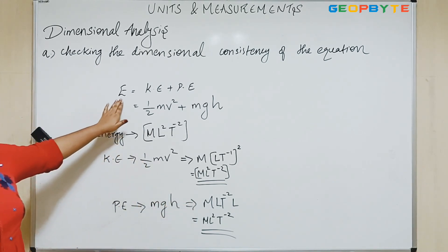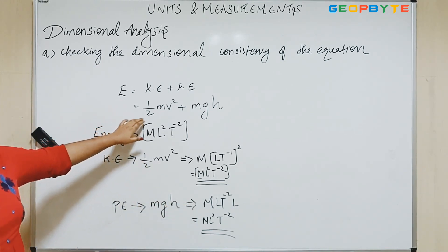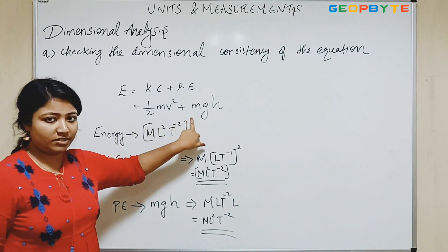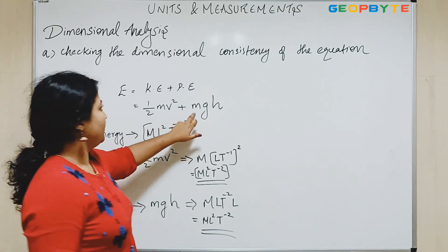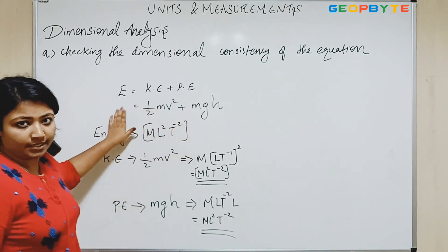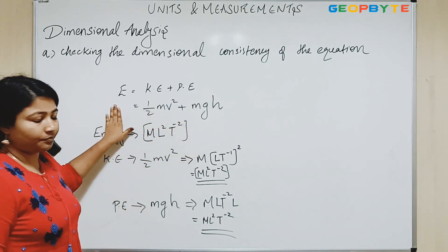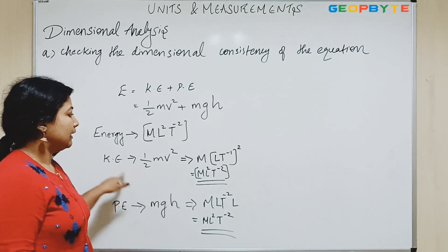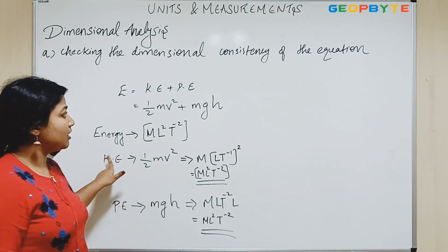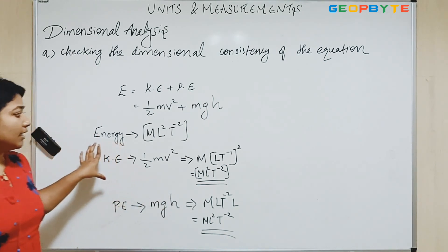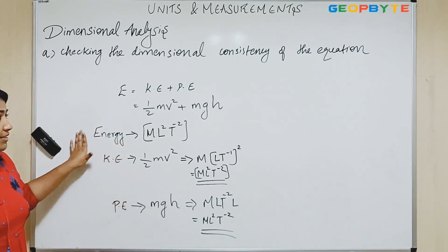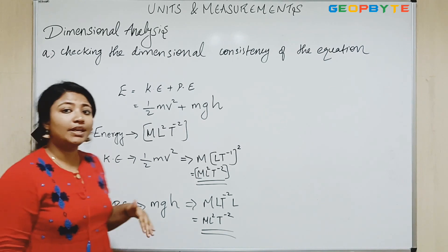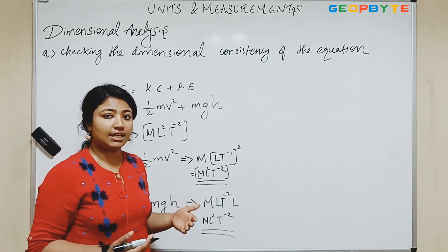So the equation E equals half M V squared plus M G H is dimensionally consistent. But you have to remember one thing: a dimensionally consistent equation may not be physically correct. For example, kinetic energy — we know it is half M V squared.